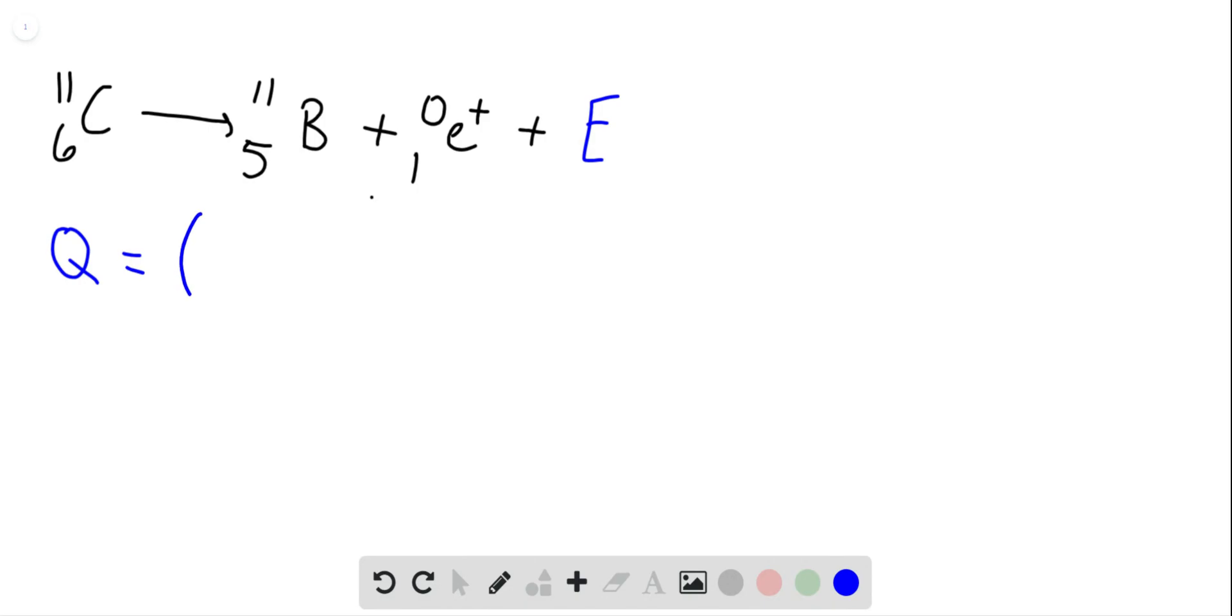So the mass of carbon-11 is 11.011423 minus the mass of boron-11 which is 11.009305, minus the mass of a positron. What is the mass of a positron now?